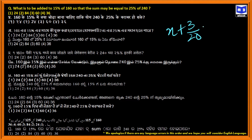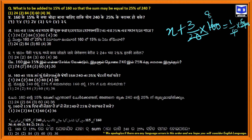15% can be written as 3/20 of 160. So that the sum may be equal to 25% of 240. Solving: x plus 24 equals 60, so x equals 36.